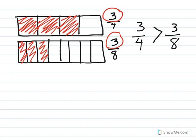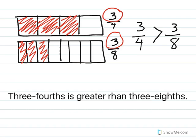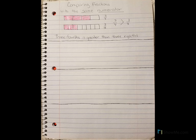Just because of the size of the pieces — when we divide it into fewer pieces, they are bigger; when we divide it into more pieces, they get smaller. Now I'm going to put it in words: three-fourths is greater than three-eighths. Your notes should look something like this right now. We still have three sections blank and we filled in the first one.